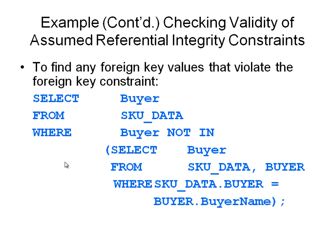We can also check the validity of assumed referential integrity constraints by finding any foreign key value that might violate the foreign key constraint. In the code, we will check the buyer column from the SKU data table to see if it matches the buyer name in the buyer table. Remember that we can use the NOT IN function to verify a value that doesn't exist in the domain. The condition will be that SKU_data.buyer should equal buyer.buyer_name.